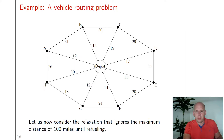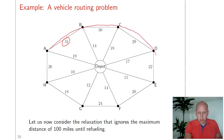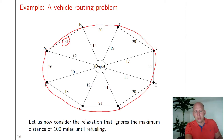We now have a feasible solution with length 214, but the question is: how good is that solution? Are we close to the optimal solution, or are improvements possible? For that question we can use relaxation. This problem has one constraint that makes it difficult: the maximum distance of 100 miles without refueling. If we remove that constraint, the problem becomes much easier to solve, because the more outer edges we use, the better our solution becomes. We cannot only use outer edges, since we must leave and return to the depot. So we use all outer edges except one.